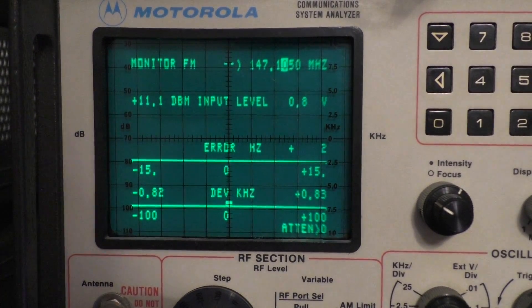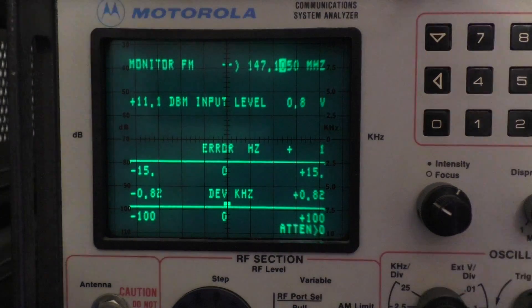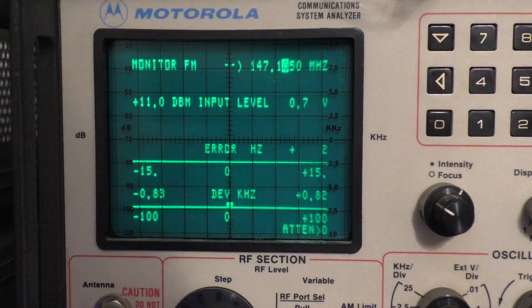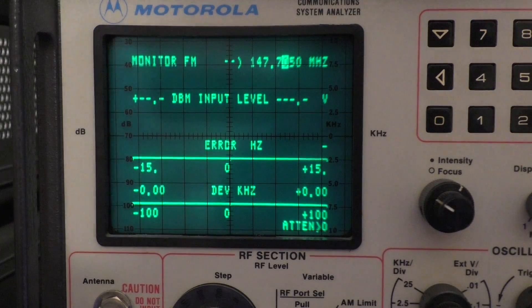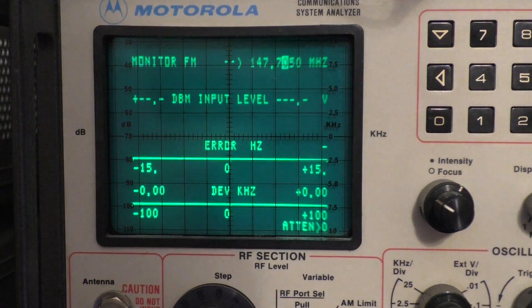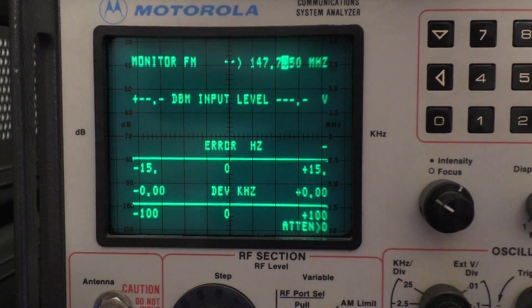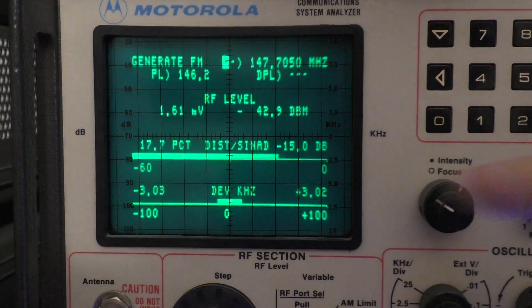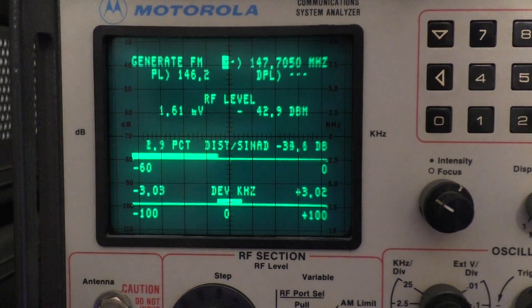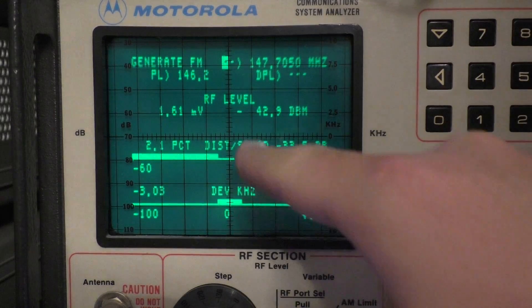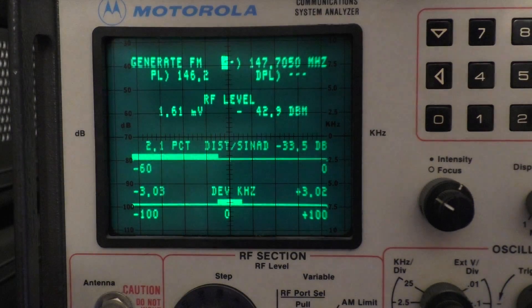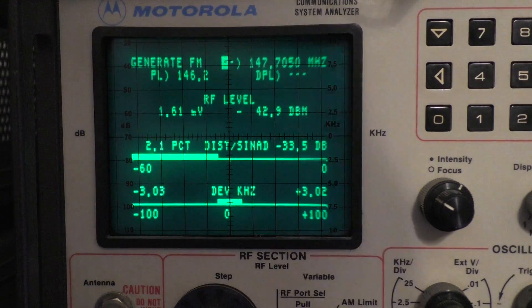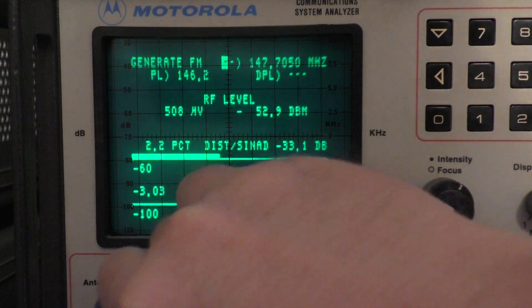Okay so what we're looking at here is what's called a Sinad test. And we're going to go to the receive frequency, 147.705. Now I have this going through a 40 dB attenuator coming out of here. I'm going to flip it to generate. Generate a tone here. And so whatever this is, 42 dBm, you have to subtract 40 dB from it. So we're hitting it with a negative 82 signal right now which is like perfect.